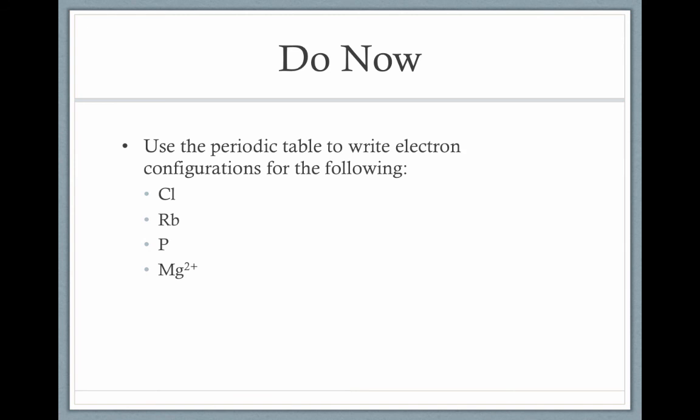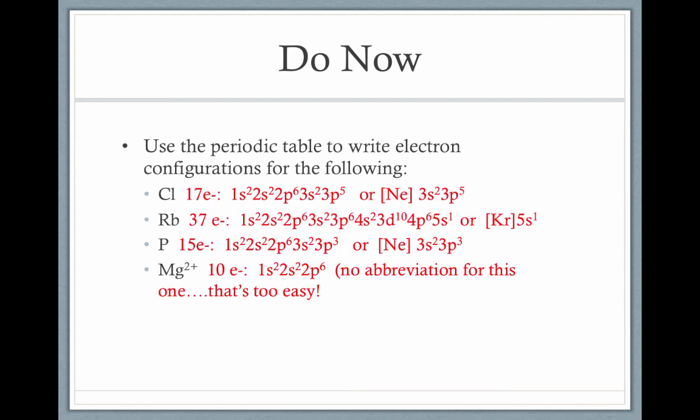Pause the video and try writing electron configurations for each of the practice elements. You may choose the abbreviated or full form, although note that for Mg2+ you may not write an abbreviated form — you'll see why if you try. Welcome back. Here are the answers: the extended version is shown first and the abbreviated version after.